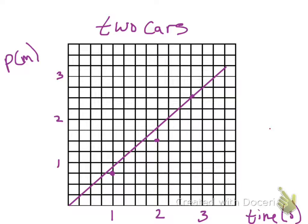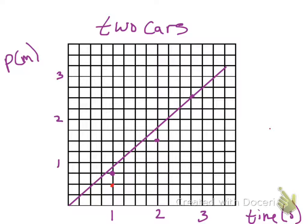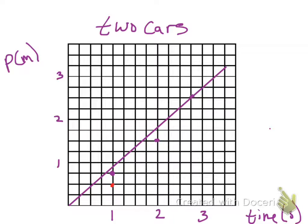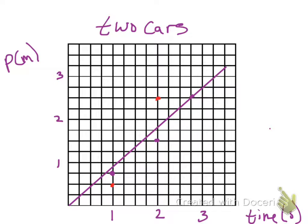Car 1 in red is quadratic. At 1 second: ½ × 1.2 × 1² = 0.6 m. At 2 seconds: ½ × 1.2 × 4 = 2.4 m. At 3 seconds: ½ × 1.2 × 9 = 5.4 m — already off the chart. So the quadratic curve rises steeply, reaching 5.4 meters by three seconds, giving us that characteristic curved shape for the position versus time graph.